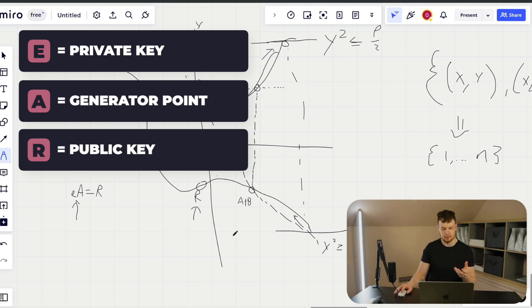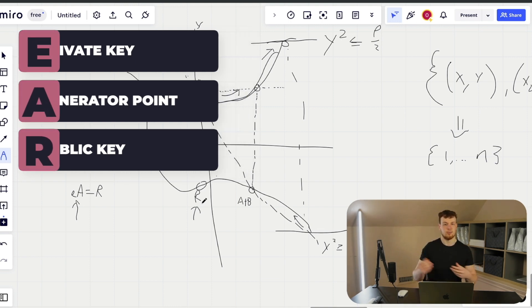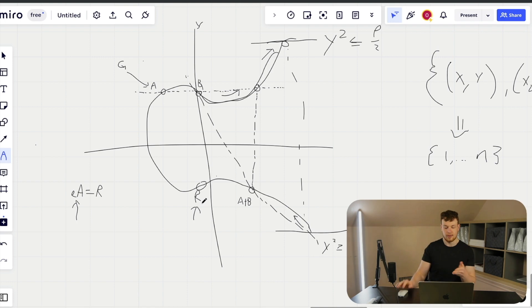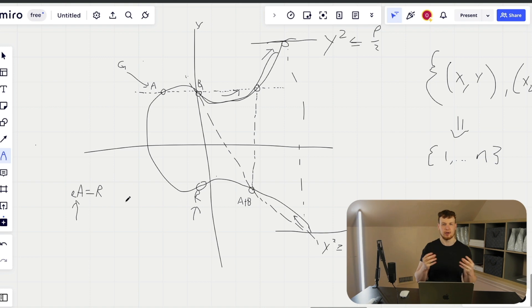This private key that only the owner of this public key knows can then be used as a mechanism to sign a message and prove that this public key, the person who owns this public key, actually signed that message. And essentially in that algorithm, it is very easy to verify that the person has actually signed that message. But it is of course very, very hard, and there's actually an aspect of randomness in there that makes it impossible to backtrack and compute the user's private key.